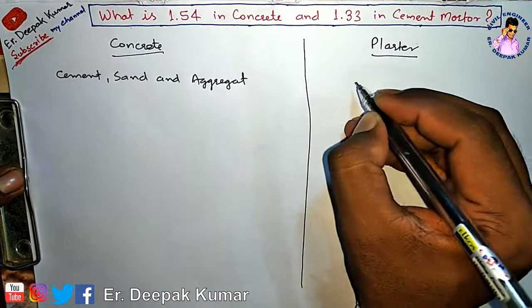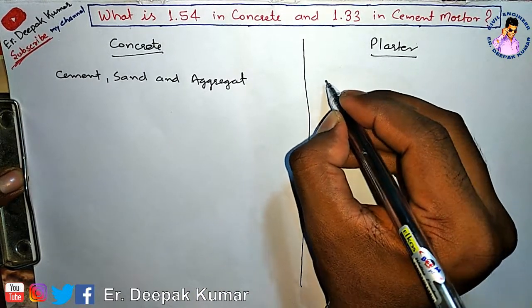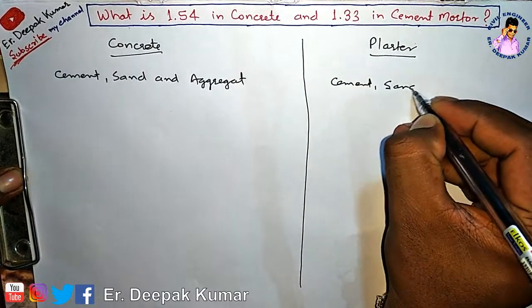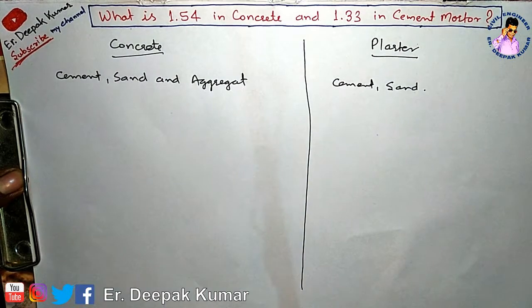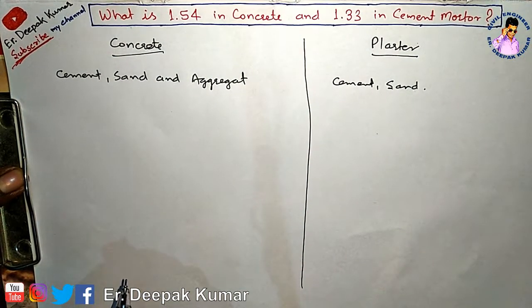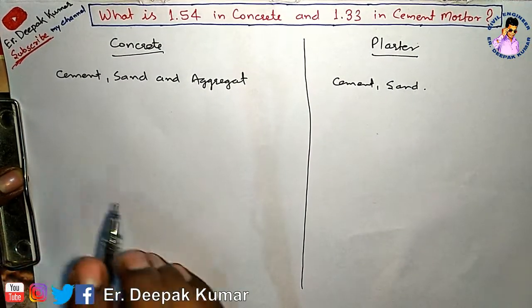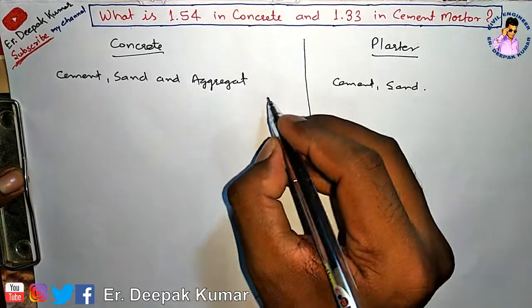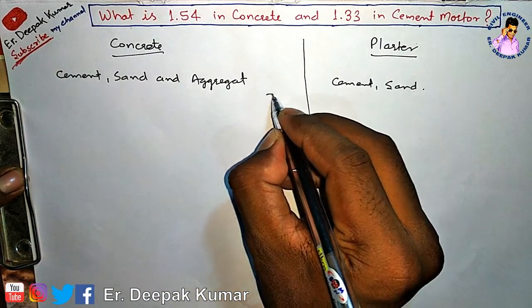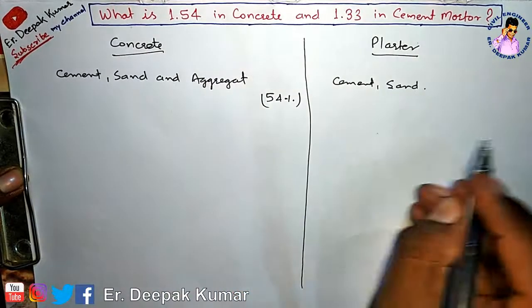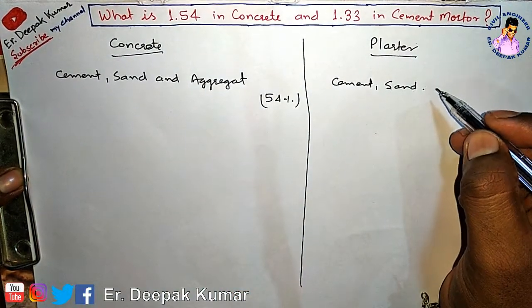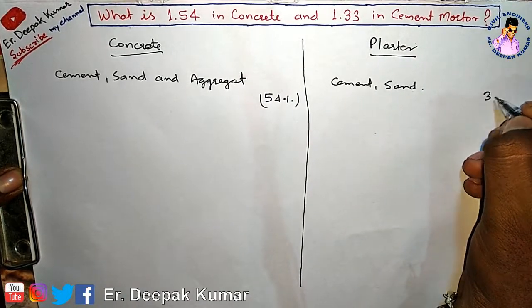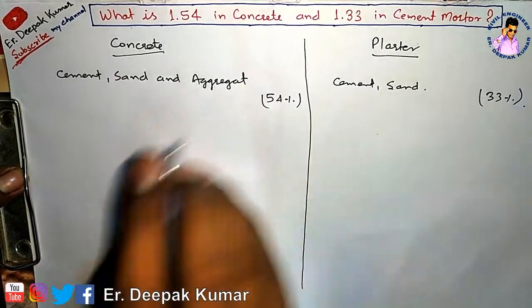In plaster, it is only a cement and sand mixture. When I convert wet volume to dry volume, there is a 54 percent rise in concrete, but when I convert wet volume to dry volume for mortar, there is a 33 percent rise.